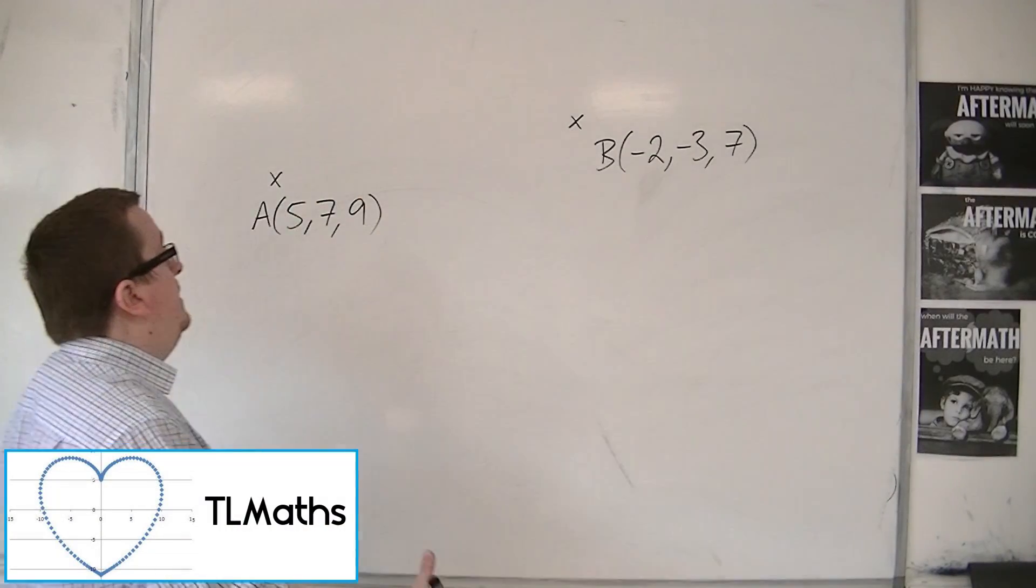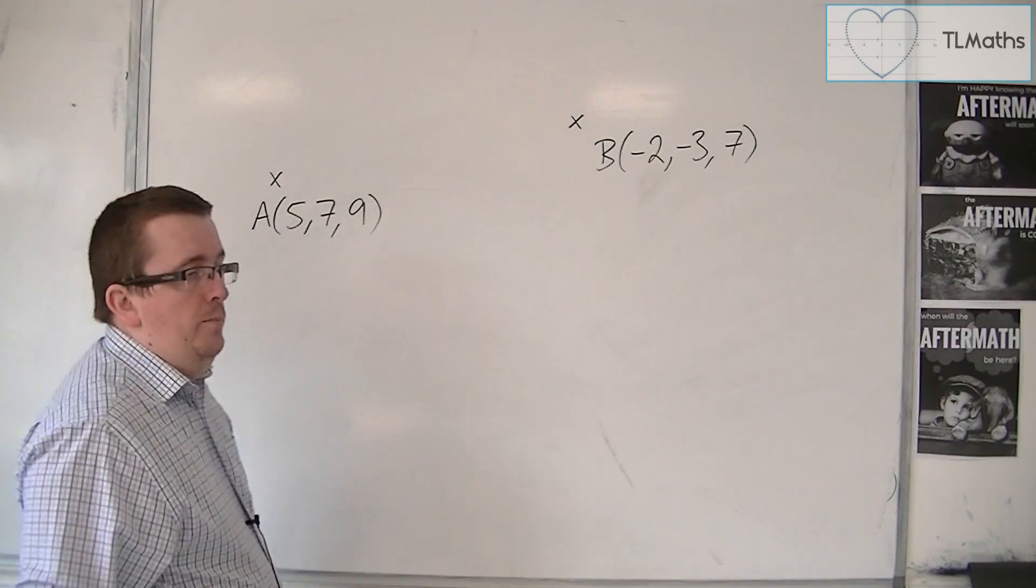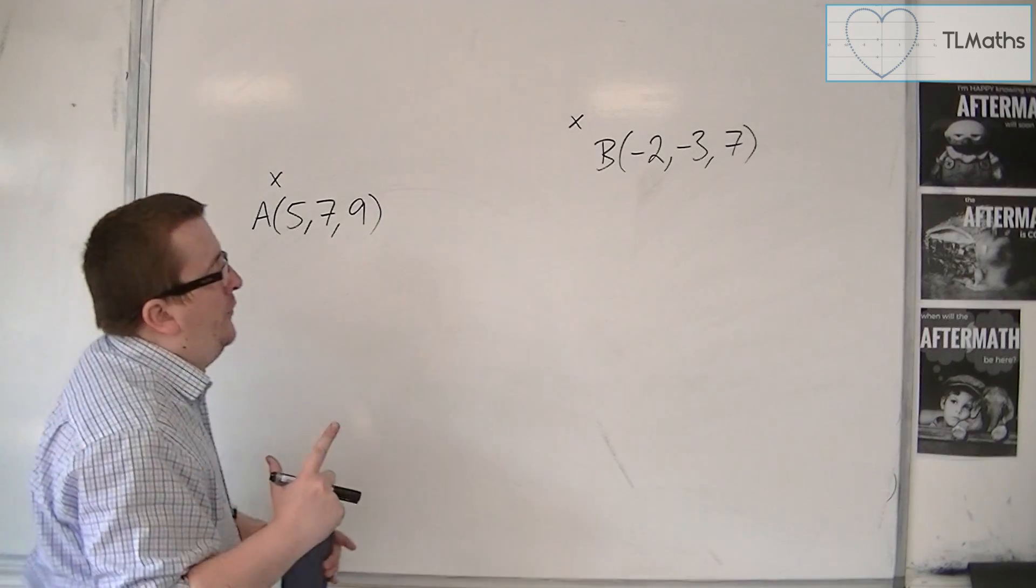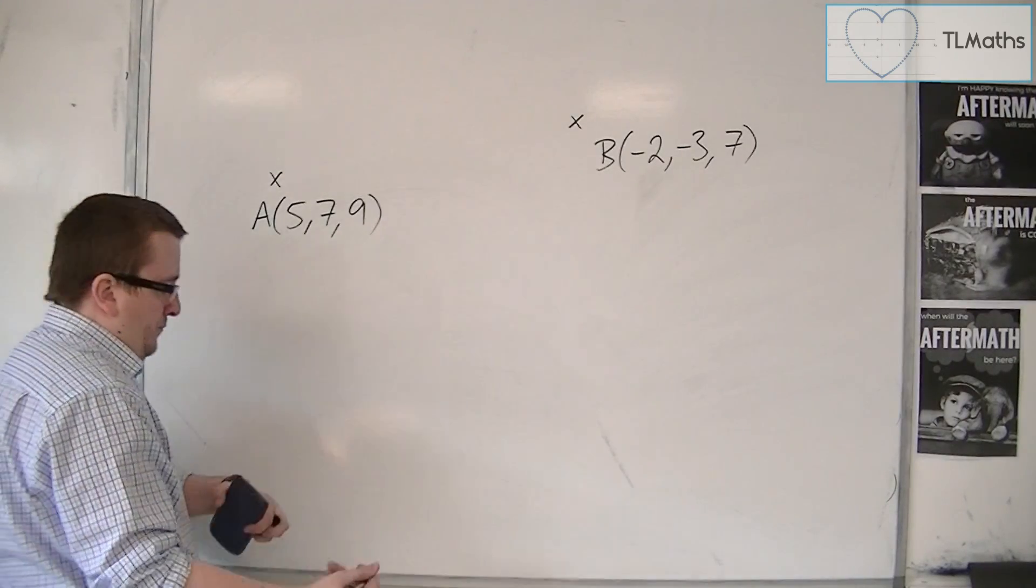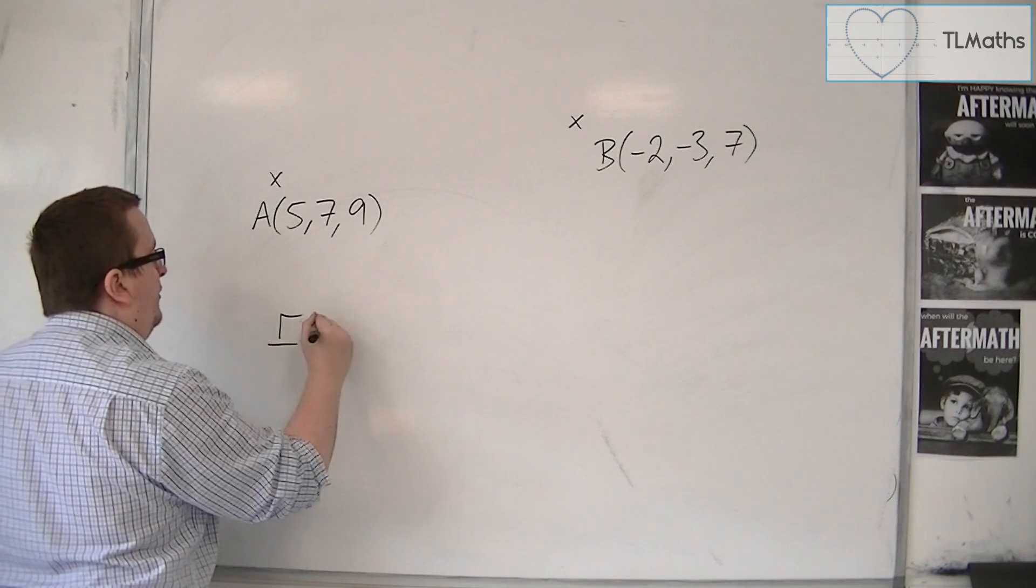Let's say I want to find the equation of the line that goes through these two points, the vector equation that goes through those two points. First of all, I know that I need a position vector.